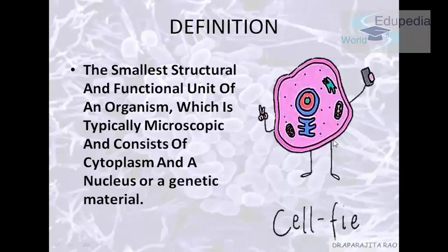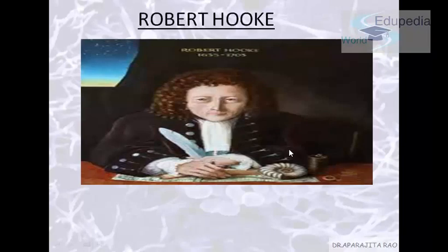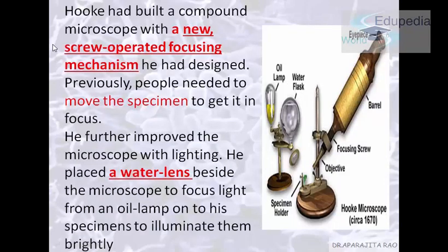So who discovered the cell? It was Mr. Robert Hooke. In 1665, Mr. Hooke made a microscope from his household items — pretty interesting. He developed a new technique: a new screw-operated focusing mechanism. Before this technique, people had to move the specimen to get focus because there was not enough light.